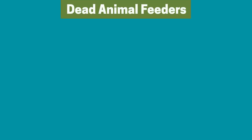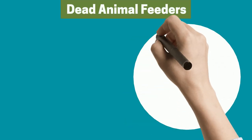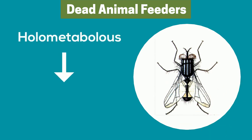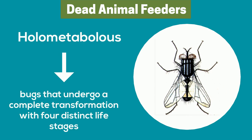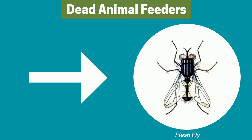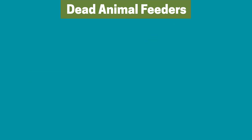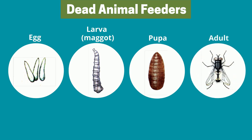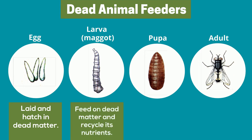To understand how bugs help decompose dead animals, we must take a look at the life cycles of holometabolous insects, which are bugs that undergo transformations. For this example, we'll take a look at a flesh fly, which feeds on dead animals. The forming stages of life are egg, larvae, pupa, and adult fly. Eggs are laid on or in dead animals, where they hatch and turn into larvae. These larvae eat the dead matter and recycle its nutrients.